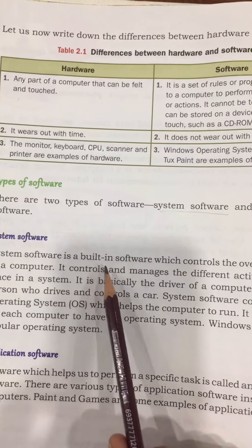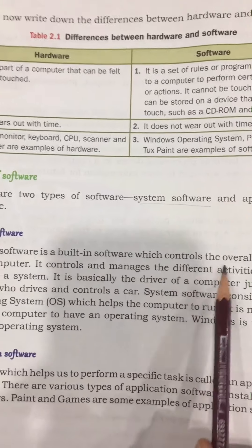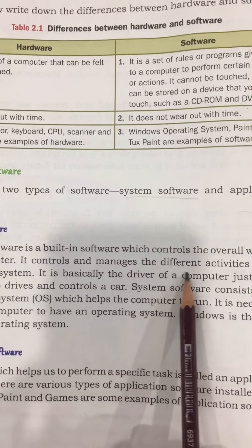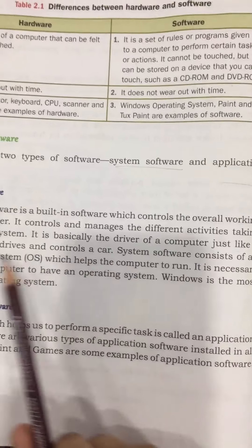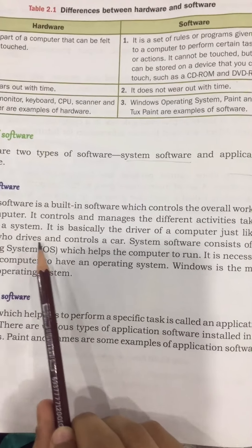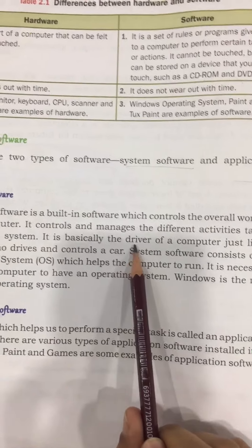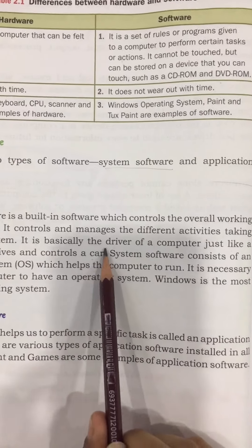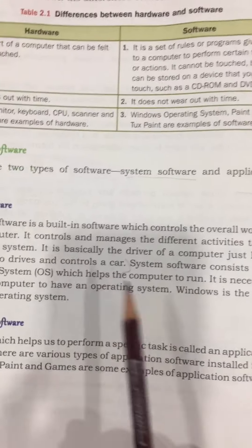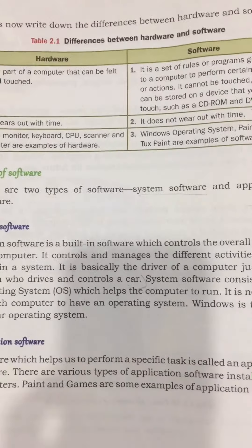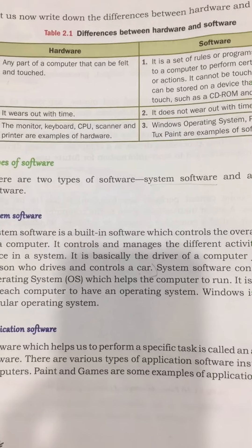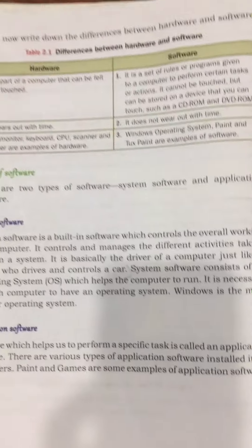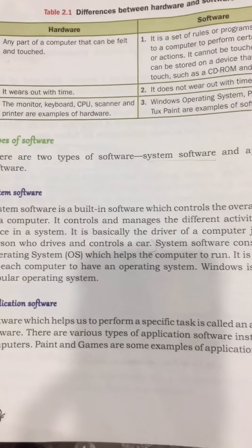System software is a built-in software which controls the overall working of a computer. It controls and manages the different activities taking place in our system. It is basically the driver of a computer, just like a person who drives and controls a car. System software controls the computer overall and is like our Windows.